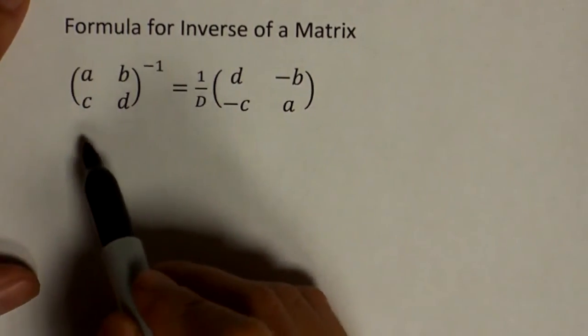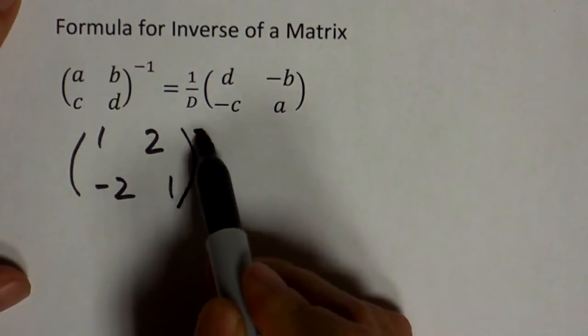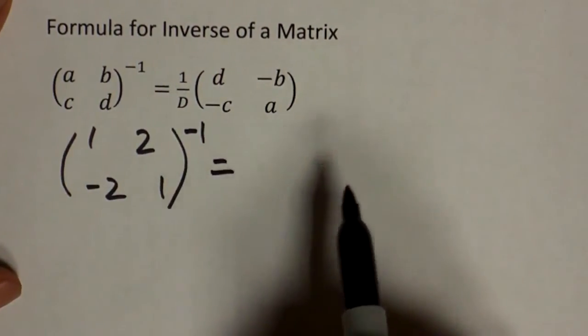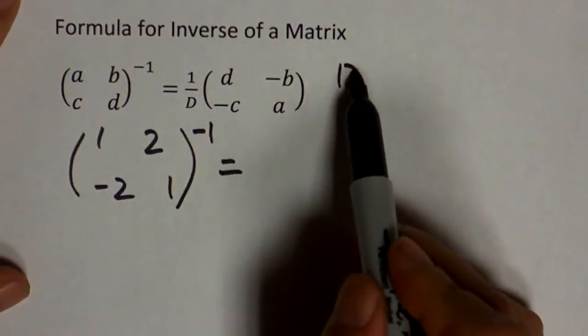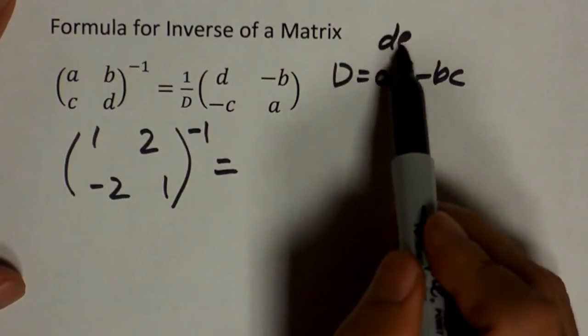Alright, so let's just check. We had one, two, negative two, and one. Let's see what this will give you. By the way, this D here is AD minus BC. That's called the determinant of the matrix.